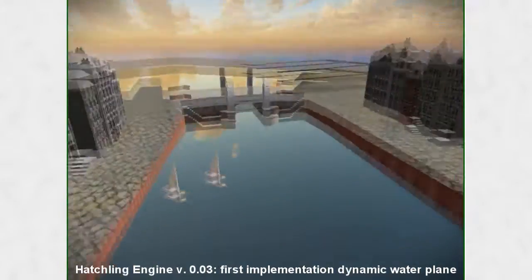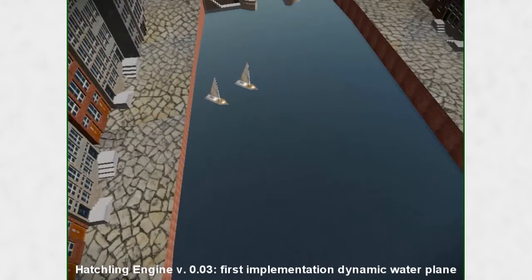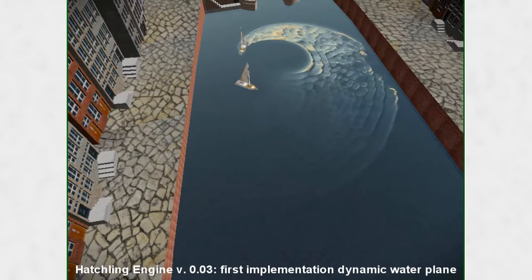This is a completely dynamic water plane that can be influenced by both dynamic and static objects in the world. As you can see I have two little boats here which I can move with the arrow keys. As I move the boat about it creates waves.